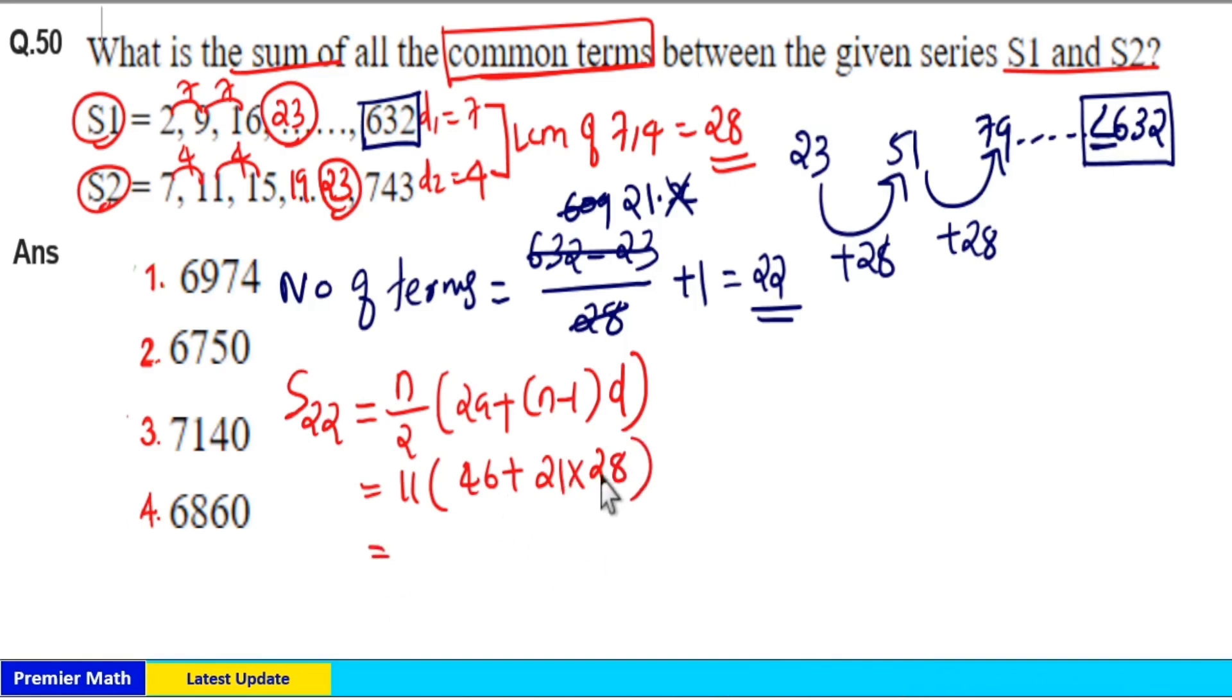So this is equal to 28 into 20 is 560. So 28 into 21 is 560 plus 28 which is 588. 588 plus 46 is equal to 580 plus 40 is 620, 620 plus 14 is 634. So 11 into 634 which is equal to 6974.